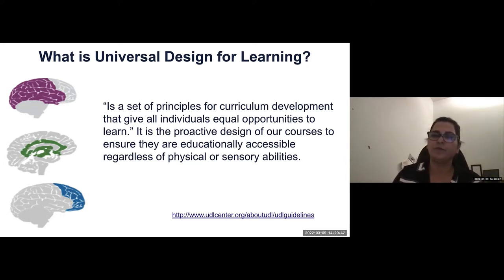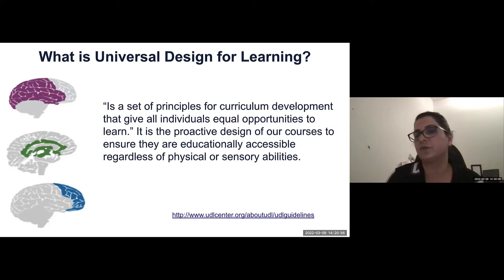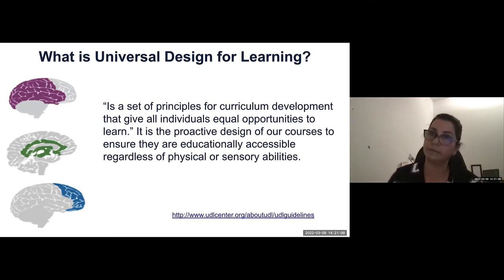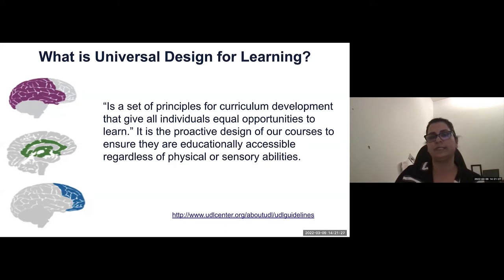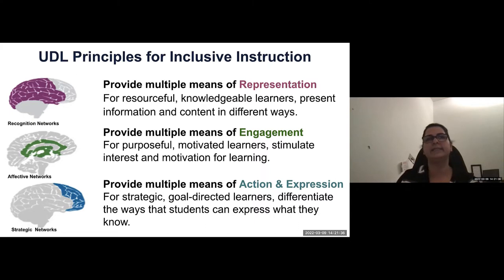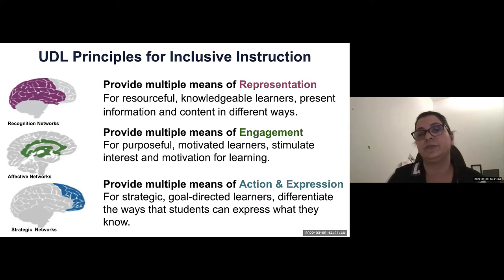The universal design movement in learning has its roots in universal design in architecture. Universal design for learning is a set of principles for curriculum development that give all individuals equal opportunity to learn. It's proactive design — it helps us think about redesigning and creating new designs rather than merely accommodating students. It's a framework to improve and optimize teaching and learning for all people based on scientific insights into how humans learn. Today's session won't focus exclusively on this, but I wanted to share this framework and its three principles.